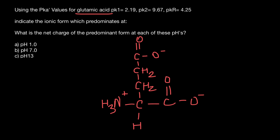The overall net charge of this amino acid at physiological pH, which is 7.4, gives the predominant form a net charge of minus one: plus one, minus one, minus one equals minus one.